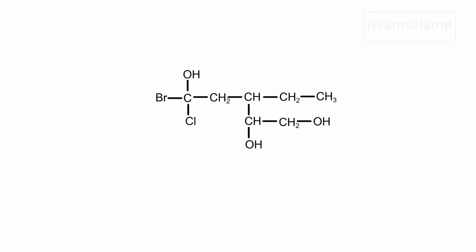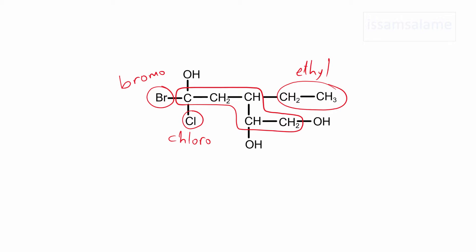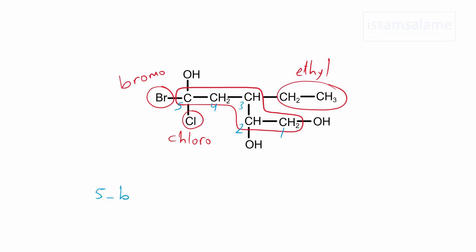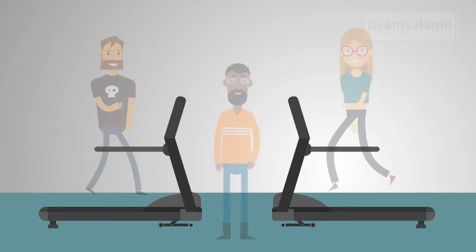Here is another example with three hydroxyl groups. This is the longest chain that includes the maximum possible number of hydroxyl groups. The substituents are bromo, chloro, and ethyl. If we start numbering from the left, the hydroxyl groups are at carbons 1, 4, and 5. If we start from the right, they are at carbons 1, 2, and 5. So we number from the right to give the lowest locants. The name is 5-bromo-5-chloro-3-ethyl-1,2,5-pentanetriol, using triol since we have three hydroxyl groups.